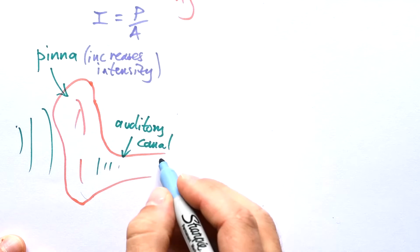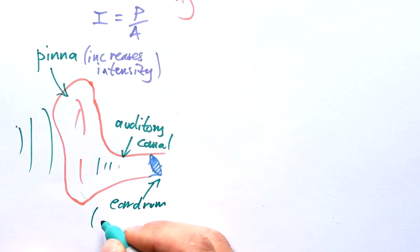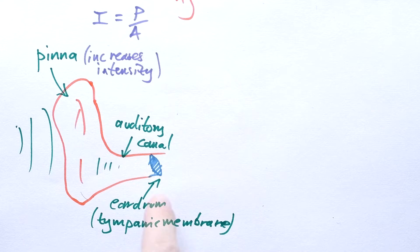Then you probably know what comes next, that is the eardrum, or to give it its proper name, the tympanic membrane. It's sort of like a silvery gray color. The eardrum separates the outer ear from what comes next, that's the middle ear.